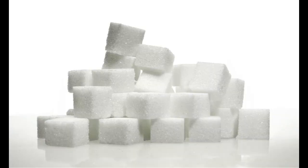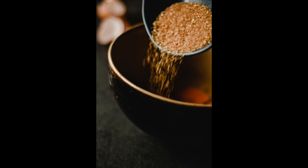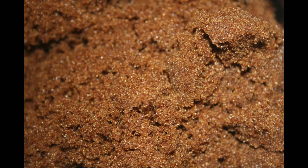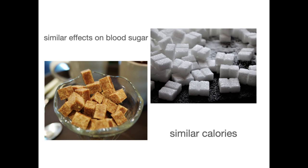Question two: brown sugar versus white sugar — which is the healthier choice? White sugar is a highly refined form of sugar processed to remove all traces of molasses, leaving behind pure sucrose crystals. Brown sugar is made by mixing white sugar with molasses, giving it a brown color, slightly sticky texture, and a caramel-like flavor that's great for recipes where a deeper, richer taste is desired.